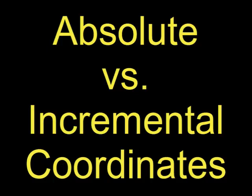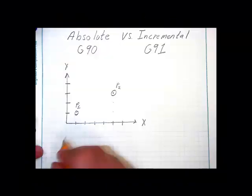There are two ways to specify the location of the end mill. The first way is to use absolute coordinates. Absolute coordinates locate the tool relative to the work coordinate system. Incremental coordinates, on the other hand, locate the end mill relative to its last position. The code for absolute coordinates is G90 and the code for incremental coordinates is G91.